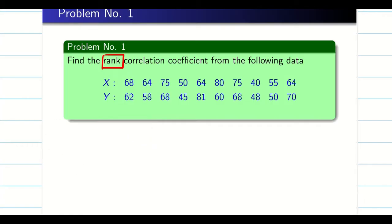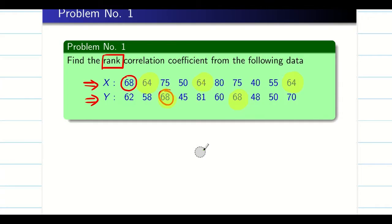Before solving the problem it is important to check whether any rank is repeating. In this case 64 is repeated thrice. The very important thing is you have to check the repetitions separately — in X alone and in Y alone. You should not check repetitions between X and Y. For example, 68 is repeated twice inside X. Even if there is one repetition in either X or Y, it becomes a repeated ranks problem. Here in Y also we have repetitions.